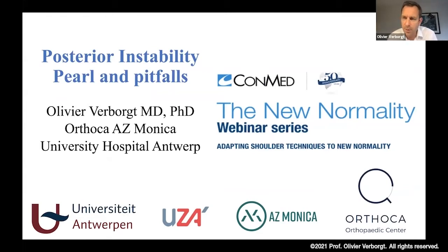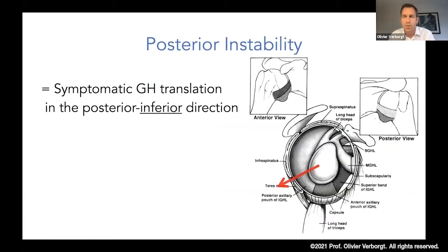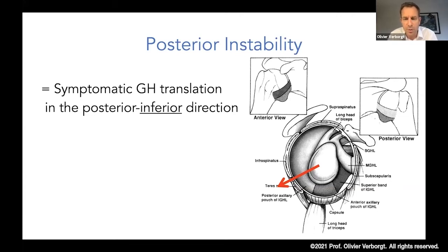Posterior instability is of course a little bit less common, and in some ways similar to anterior instability, but also as Alex already said, in a lot of ways different. So I'm going to go over some specific details that I think are important if you have to treat this type of patient. First of all, posterior instability is really a posterior-inferior instability, and that has to do with the fact that just like on the anterior part the coracoid is in the way, on the posterior part the spine of the scapula is in the way. So if the shoulder dislocates posteriorly, it's really more posterior-inferior, and that is important when you start treating these patients.